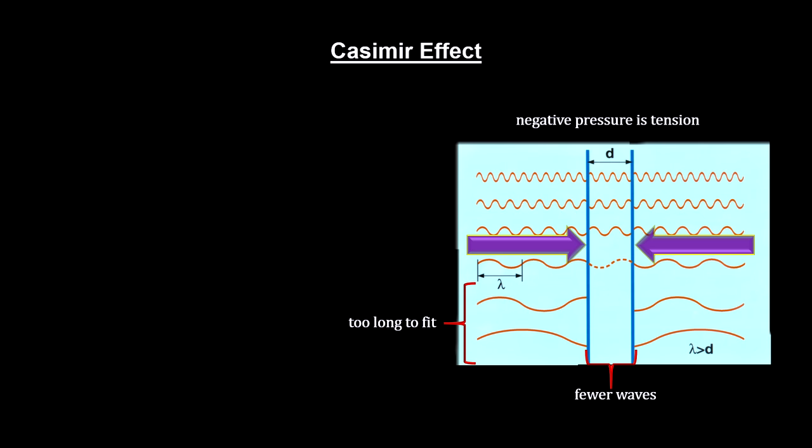Negative pressure is called tension. This effect is called the Casimir effect.